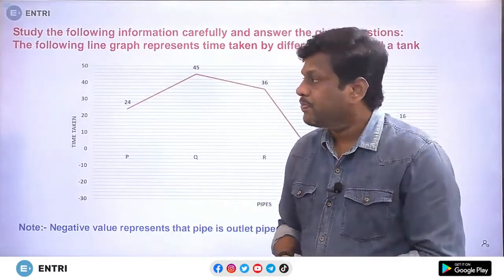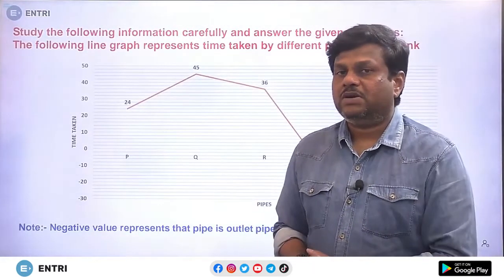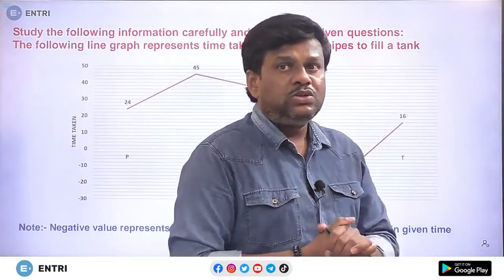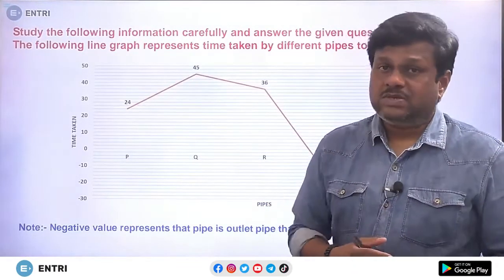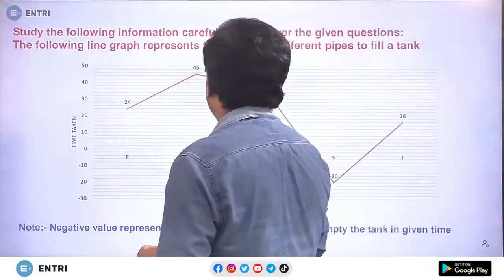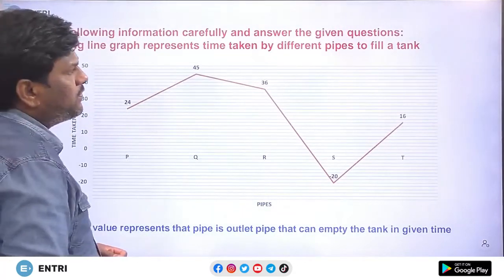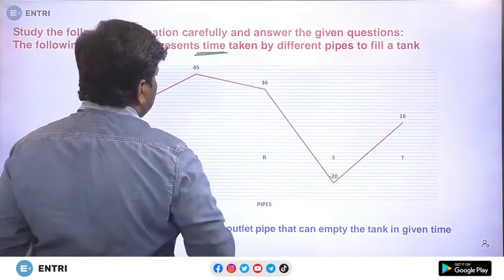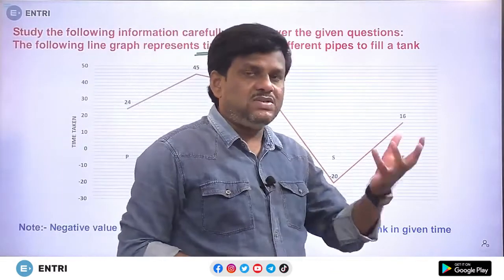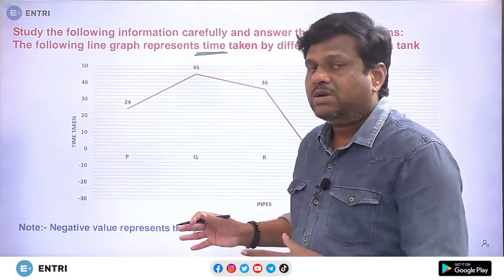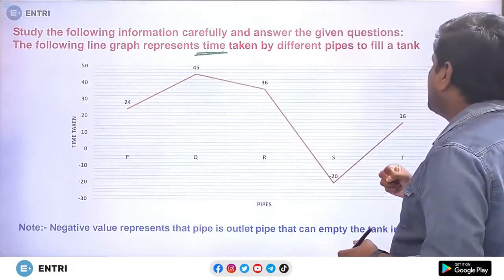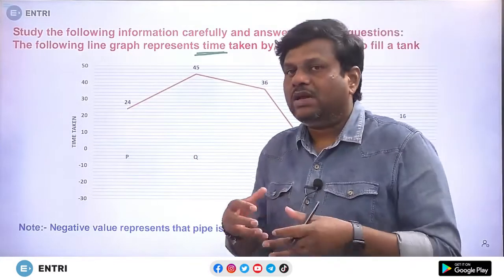There is definitely one question from pipes and systems in your mains examination for clerk and PO, apart from the singular terms of time and work. Before answering time and work data interpretation, please review some basic concepts of time and work. The line graph represents time taken by different pipes to fill the tank. The values mentioned are 24 hours, 45 hours, 36 hours, negative 20 hours, and positive 16 hours.